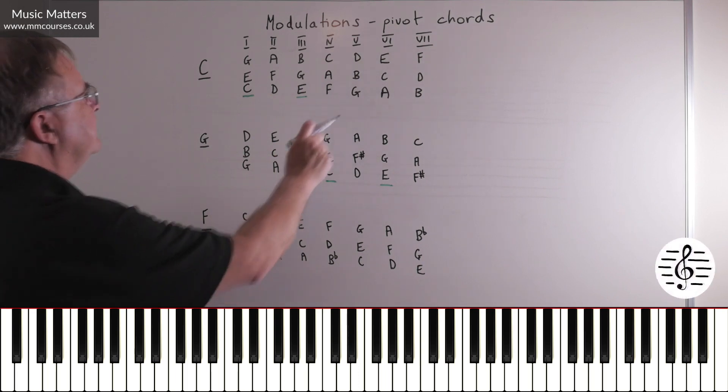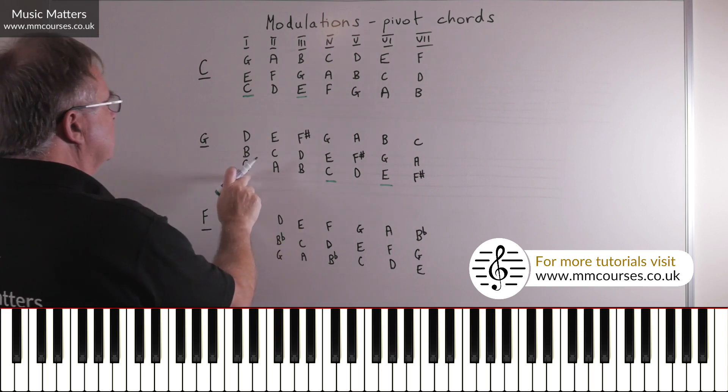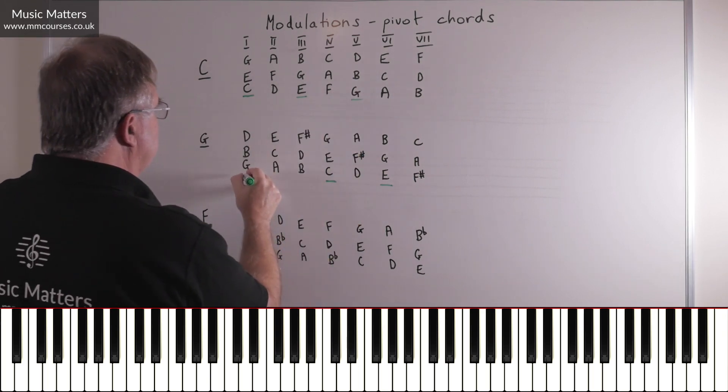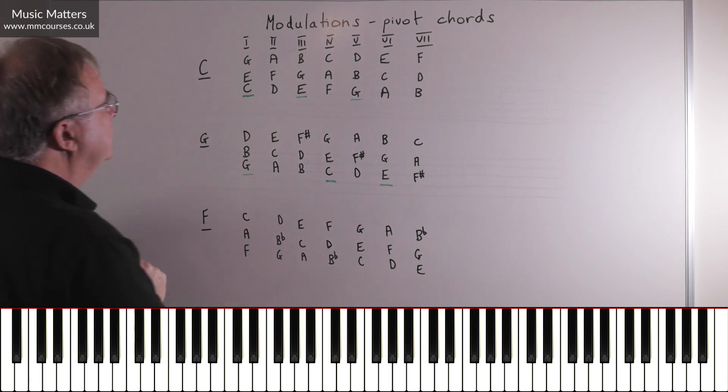What about chord V in C major, G, B, D? Oh look, G, B, D, yeah. That's chord V in C major, it's chord I in G major.